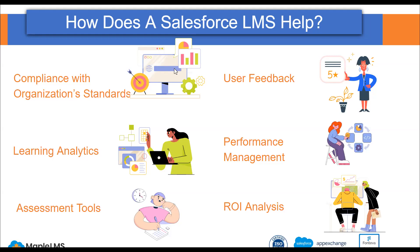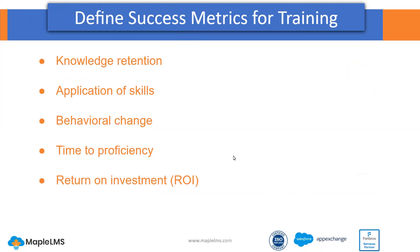Let's turn our focus on how we can define success metrics for training. Success metrics for training can vary depending on the context and goals of the training program. Here are some common metrics that can be used to measure the success of a training. Firstly, knowledge retention — this metric measures the amount of knowledge or skills that trainees retain after completing the training program. It can be measured through assessments or surveys, such as a post-quiz or post-assessment survey, that would test their understanding of the material.